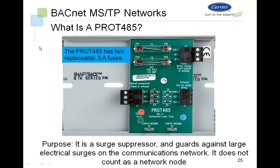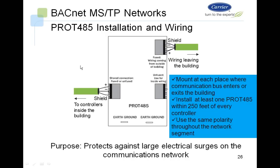The PROT45 is a surge suppressor that guards against large electrical surges on the network. Unlike the repeater, it does not count as a network node. It has two replaceable half-amp fuses as part of its protection — these will blow during a surge and can be replaced. In a typical installation, one side connects to the building and the other side goes to or from the building. Mount it wherever the bus enters or exits the building to provide additional protection. A PROT45 can be installed within 200 feet of a controller, and you must maintain the same polarity throughout the network.